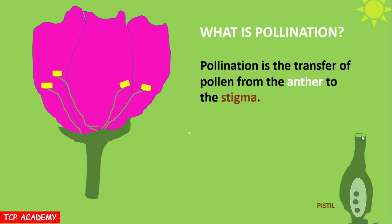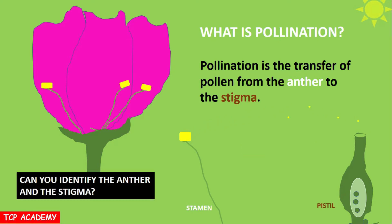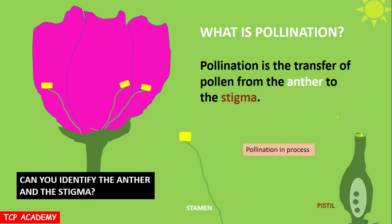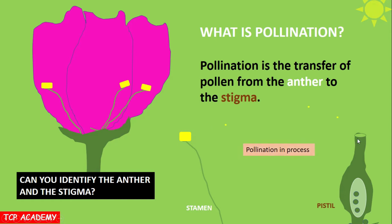If you're looking at the screen, this is where you would find the stigma, taken from the flower to your left. Here we have the stamen, for which the anther is also a part. Now, paying close attention to the screen, you are seeing the process of pollination taking place — pollen grains being transferred from the anther to the stigma.